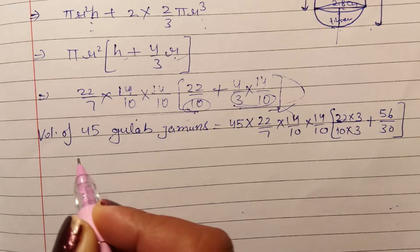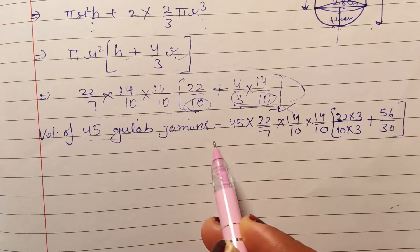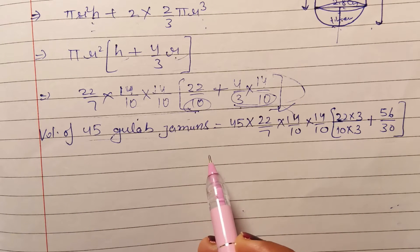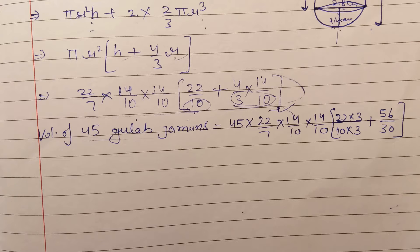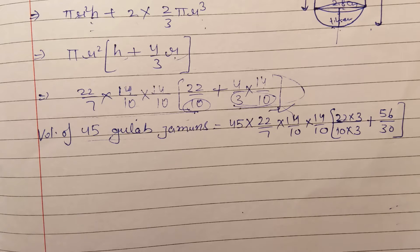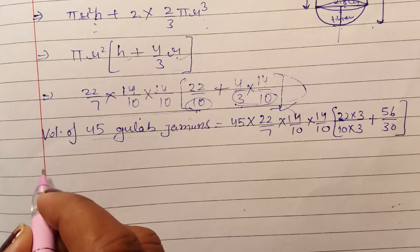यह volume of 45 gulab jamuns है। अब हमें find out करना है how much syrup would be found in 45 gulab jamuns। अगर एक gulab jamun के volume का 30% syrup है, तो 45 gulab jamuns का भी 30% find करेंगे — उतना ही syrup contained होगा।